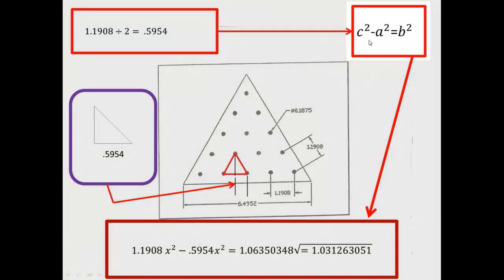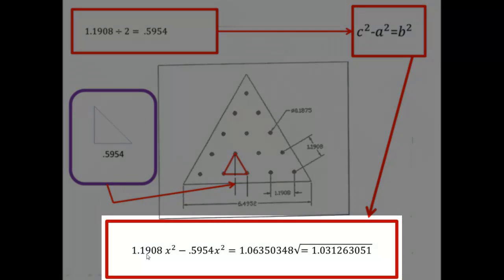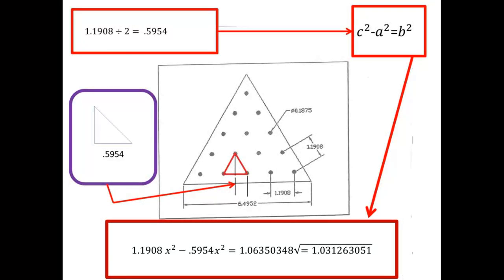Now we're going to take c squared minus a squared and it's going to make b squared. In order to do that, find the 1.1908 squared minus the base now being 0.5954 squared and that equals 1.0635 and so forth. And if we get the square root of that, that's going to give us the height of that triangle being 1.0313 rounded off.